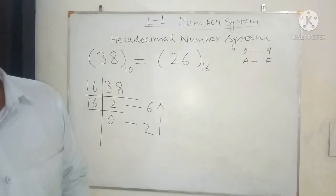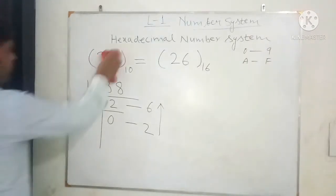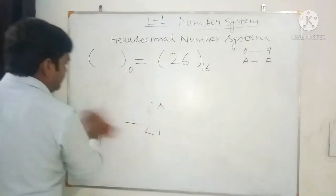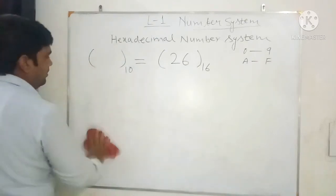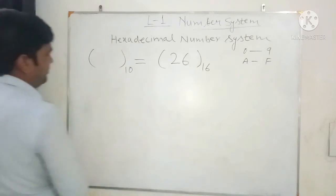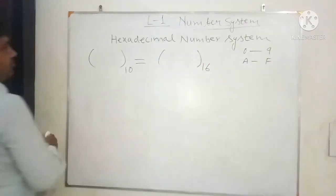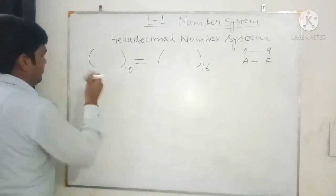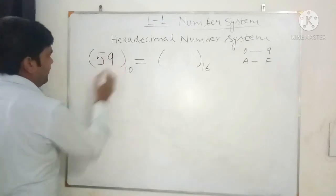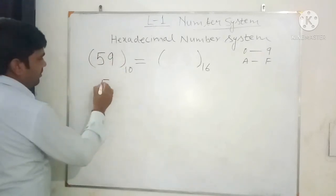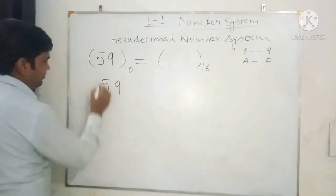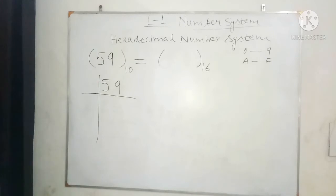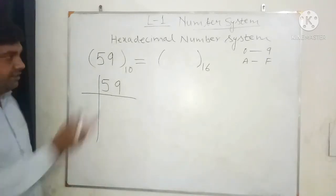Next we take 59 as the decimal number and convert it into hexadecimal. We again divide the decimal number 59 by the base of the hexadecimal number system, which is 16.